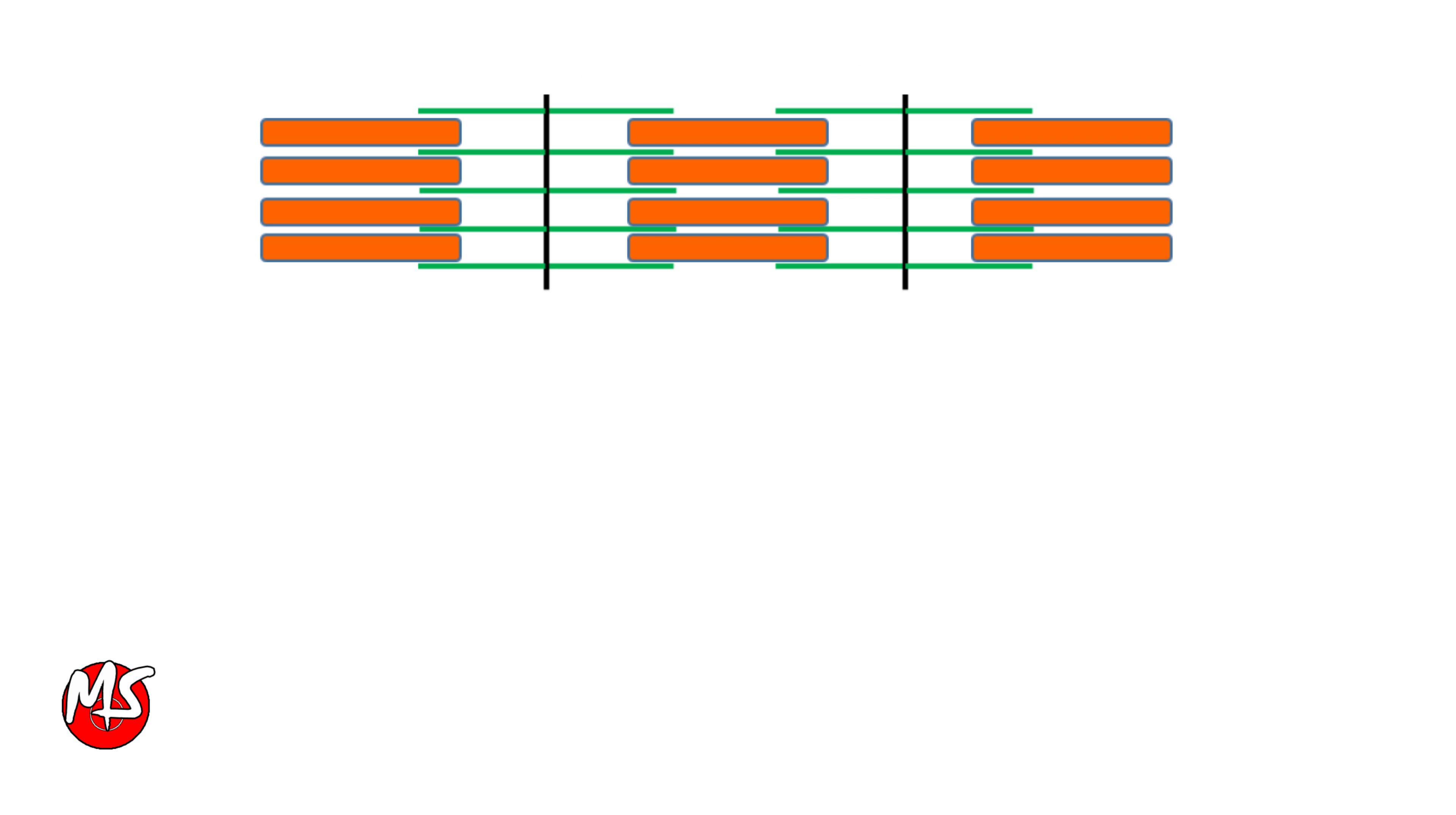The portion of myofibril between two Z lines is called a sarcomere. In light microscope, myofibrils have light and dark bands. The dark bands are called A-bands.